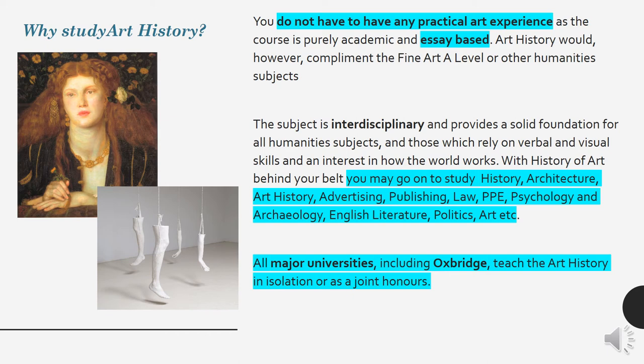The subject is highly interdisciplinary. Students of art history may go on to study a really wide range of subjects such as history, architecture, art history, advertising, publishing, law, PPE, psychology, archaeology, English literature, politics, fine arts — the list goes on. All major universities including Oxford teach art history in isolation or often as a joint honours if you wanted to combine it with another subject.